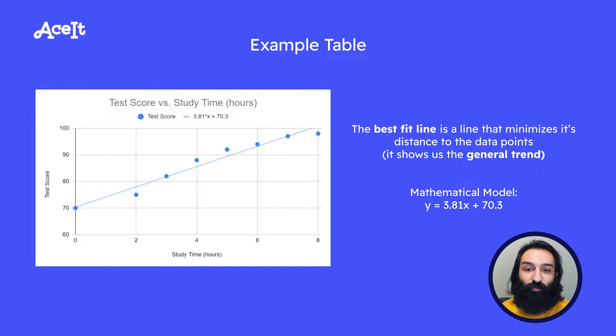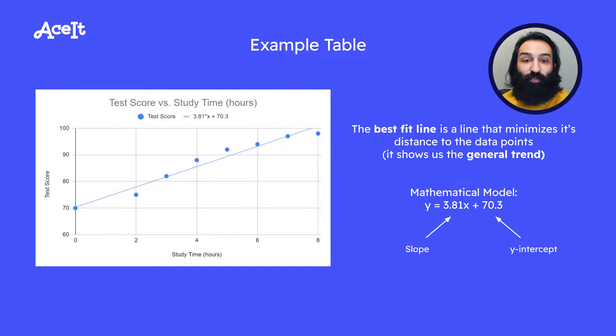So let's look at the formula y equals 3.81x plus 70.3. Based on the information we just learned in this formula, we can determine that the slope is 3.81x and the y-intercept is 70.3.